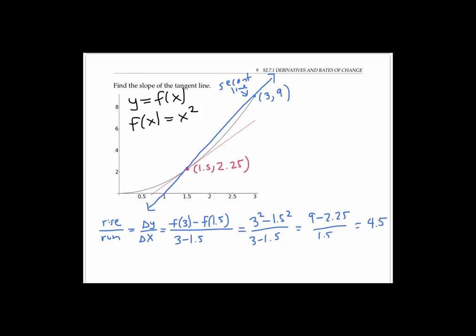The idea here is that the slope of my secant line is an approximation of the slope of my tangent line. But in this example, the secant line I've used gives only a very rough approximation of the tangent line — not very accurate at all.